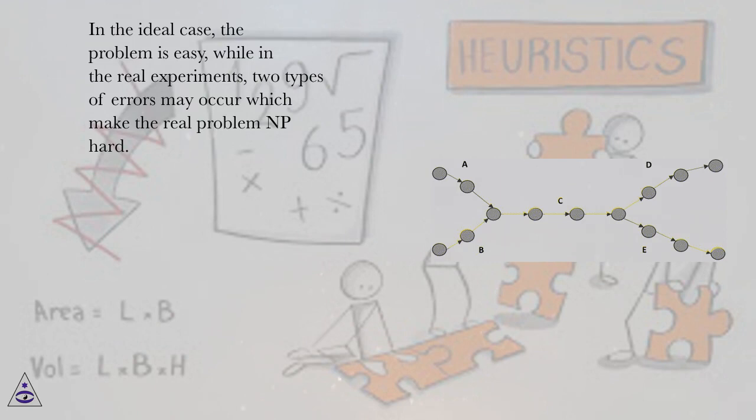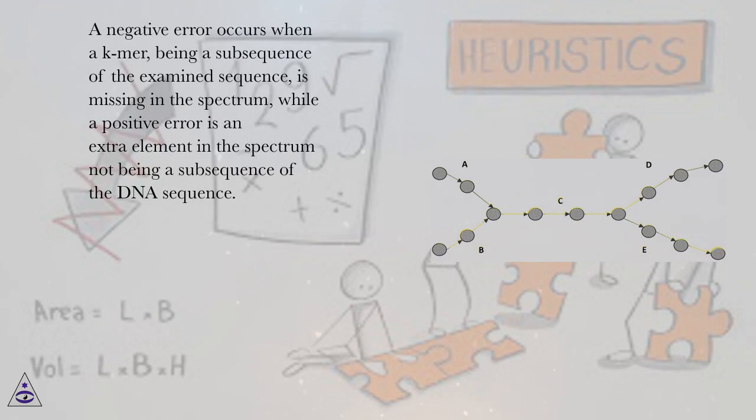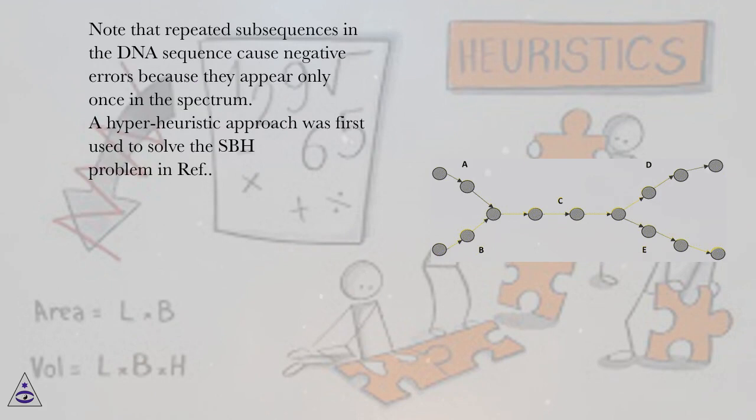A negative error occurs when a k-mer, being a subsequence of the examined sequence, is missing in the spectrum, while a positive error is an extra element in the spectrum not being a subsequence of the DNA sequence. Note that repeated subsequences in the DNA sequence cause negative errors because they appear only once in the spectrum.